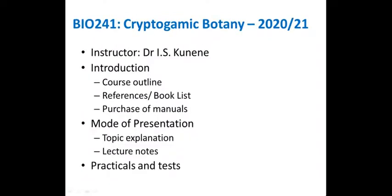Cryptogamic Botany is a core course in biology, meaning it is a course you must know. Because it is so important, it has been given four credit hours — that means four lecture hours and a three-hour practical per week. Please spend at least seven hours a week on this course. It is very robust; if you don't study constantly it will become overwhelming, but if you keep up with new material you'll be fine.